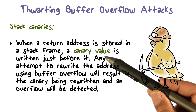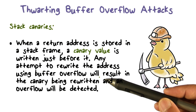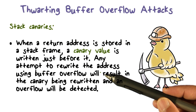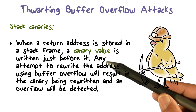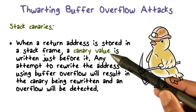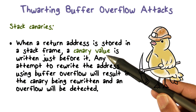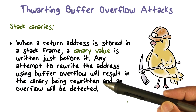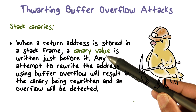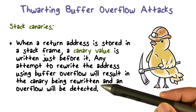So if the return address gets overwritten, chances are that the canary value is going to get overwritten also. All you have to do is, before you return from the function, check if the canary value has changed. You knew what the canary value was when the function call was made, because you had placed it in this location just before the return address. So you compare what that location contains now with the value you knew — if they don't match, there is an overflow.